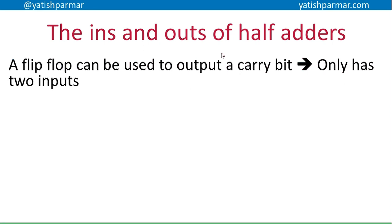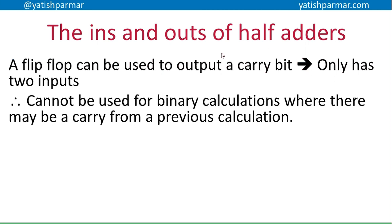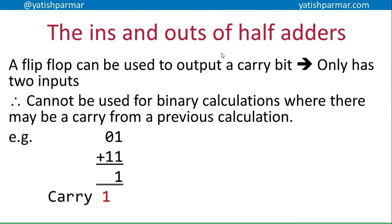A half adder can output a carry bit, but in some cases we can't use a half adder because it only has two inputs. When you have a carry from a previous calculation you've got three inputs, because you're very rarely going to add just two bits by themselves - you're going to be adding a byte, a nibble, two bytes, or whatever it is. For example, adding two bits where the second addition has three inputs because you also have a carry in.